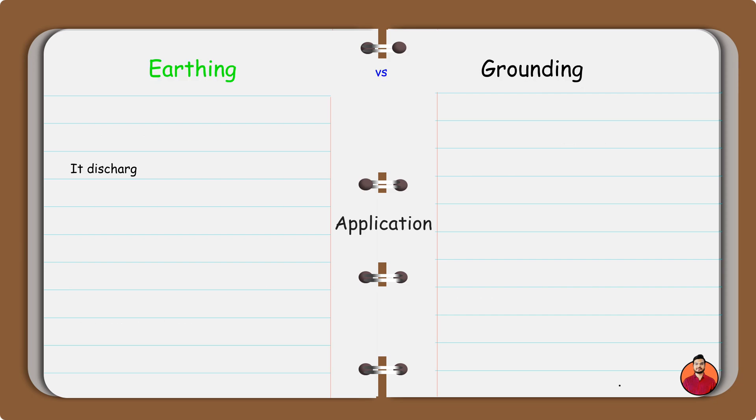Earthing discharges the electrical energy to the earth. The grounding provides the return path to the current.